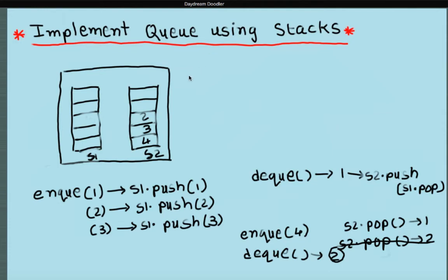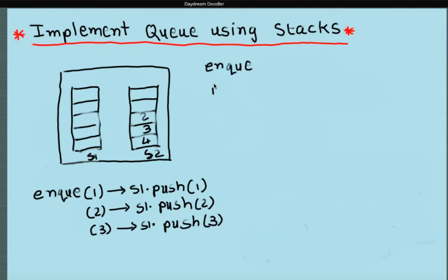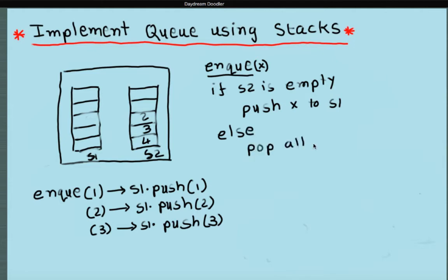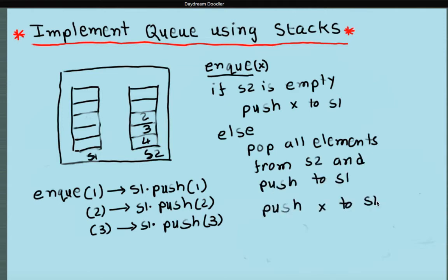So here is how the NQ logic looks like. If S2 is empty, just push the element X onto S1. Else, meaning S2 is not empty, pop all elements from S2 and push to S1, then push X to S1. For example, S1 is empty and S2 has 4 and 3, and the user calls NQ 5. S2 is not empty so we go to the else branch: pop 2 from S2 and push to S1, pop 3 from S2 and push to S1, pop 4 from S2 and push to S1, then push 5 onto S1.